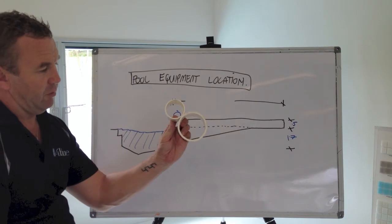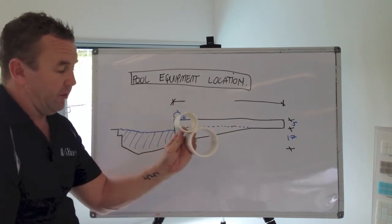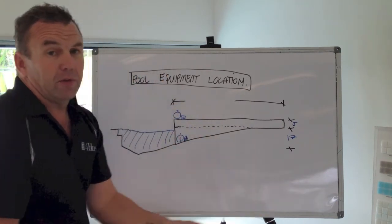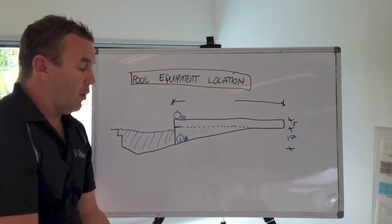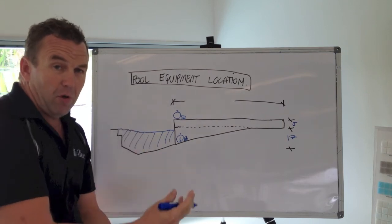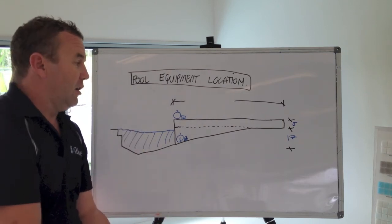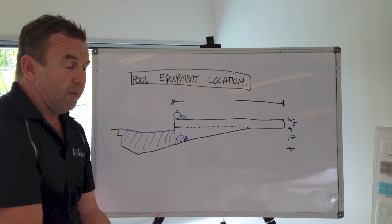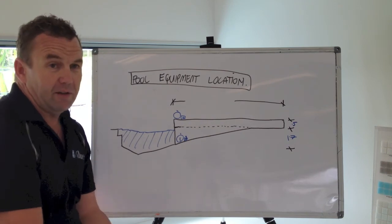And that just gives you a visual understanding of the difference in water flow that those pipes can have through them. Obviously the bigger the pipe, the less velocity, the less friction, the less head, which means the pump works easier. So instead of getting a few years out of your $1,000 pump, you might get 10 years out of your $1,000 pump.